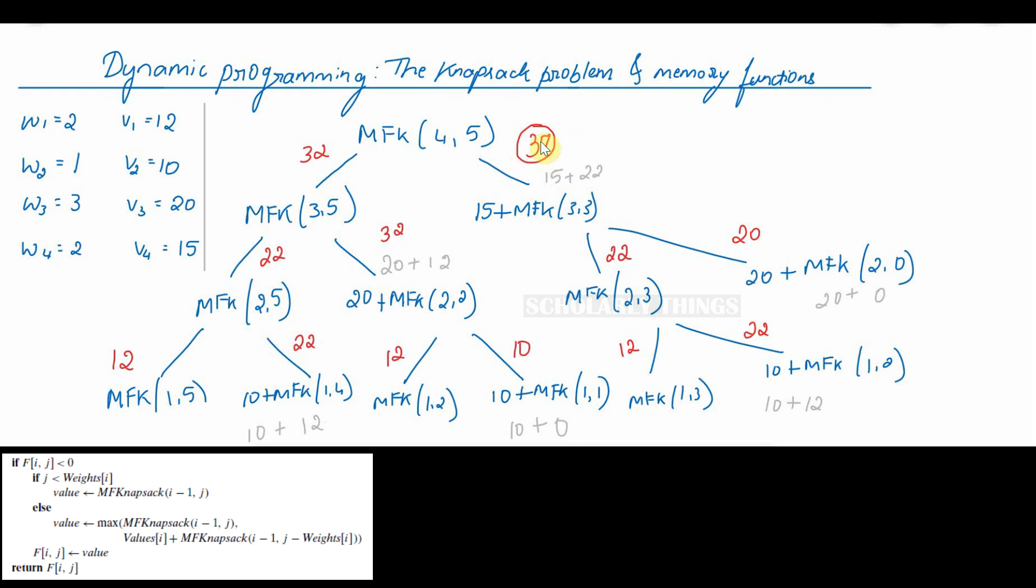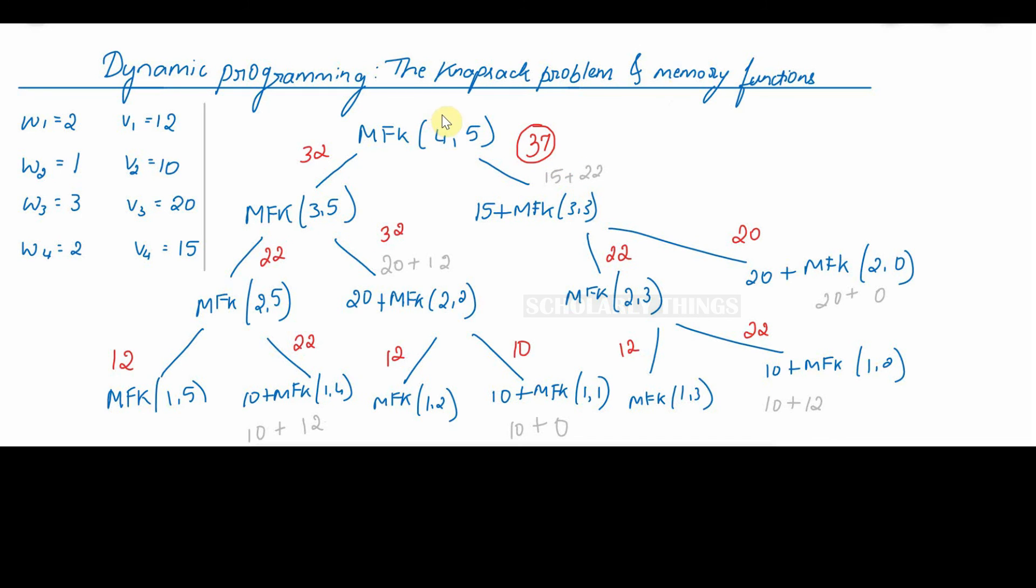37 becomes the maximized value that can fit into the knapsack. To summarize we started with the topmost value that is mfk of 4 comma 5, but to find out that we had to find the solutions to many subproblems. The algorithm was called recursively and we found the value for each of these subproblems. We found the maximum among the two values. Finally we found the maximized value to be 37.